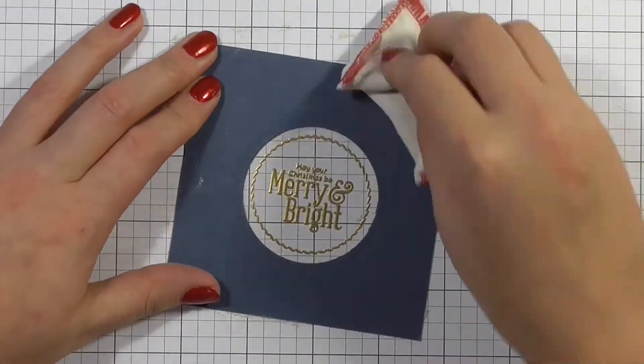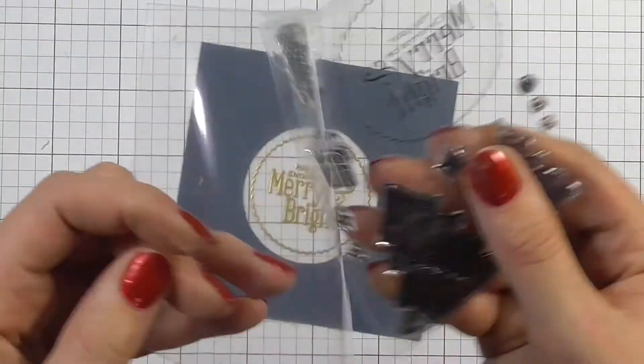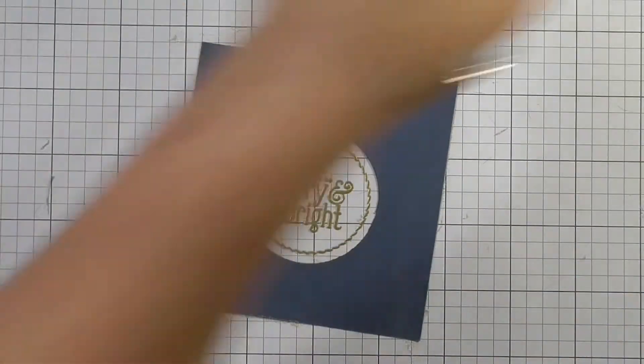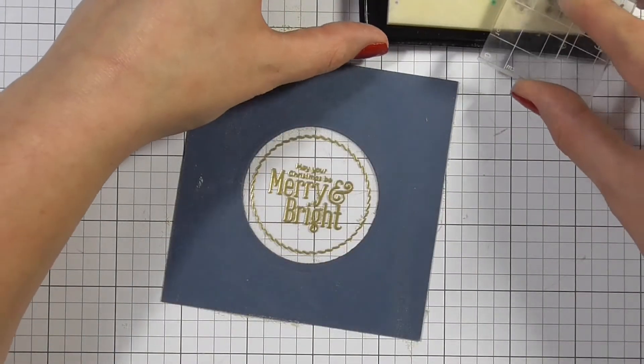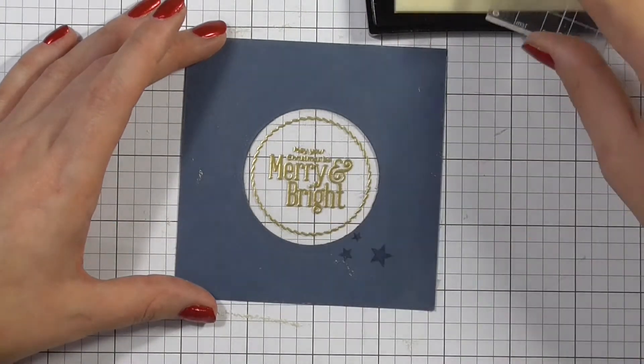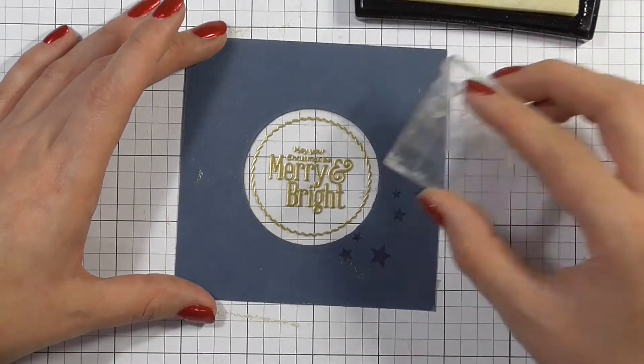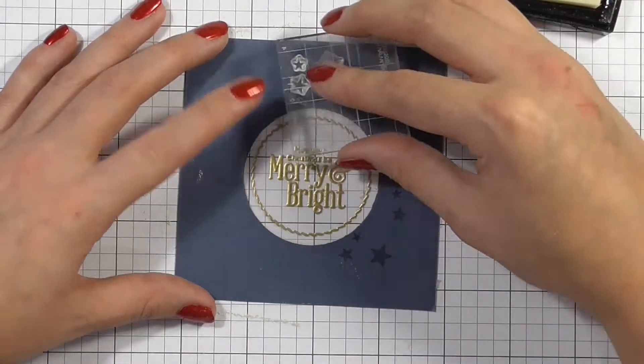Okay so now I'm applying some anti-static powder tool onto the front of this card panel, and the idea was that I was going to stamp down a whole load of these little stars and then emboss them in gold, but once I started stamping I actually really liked the tone-on-tone look that the Versamark ink gives.